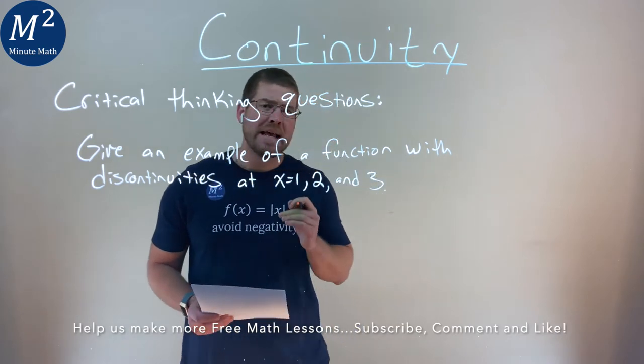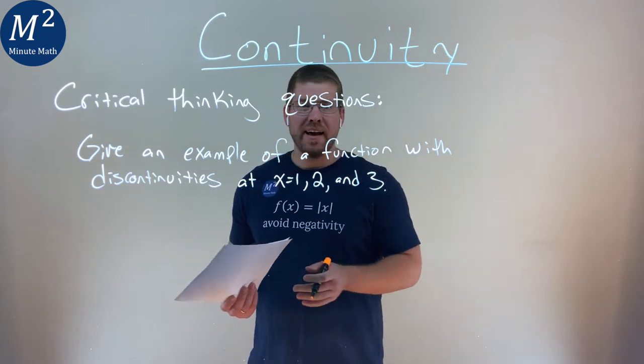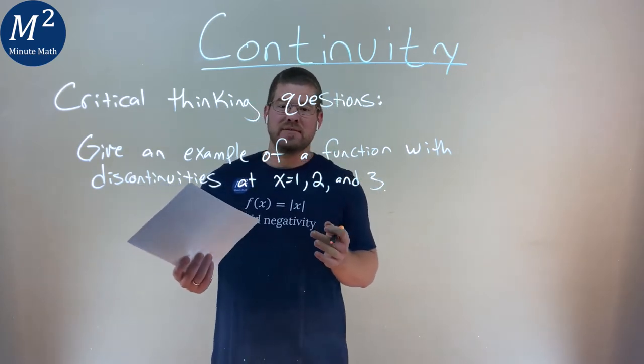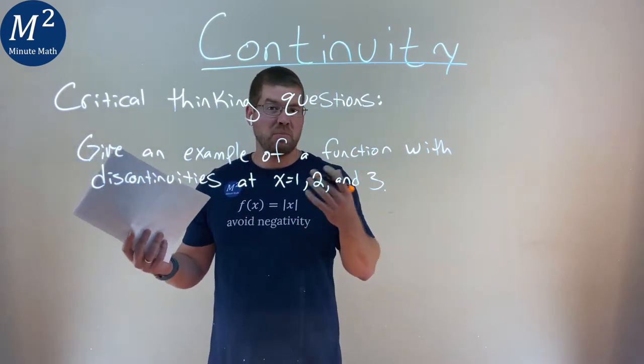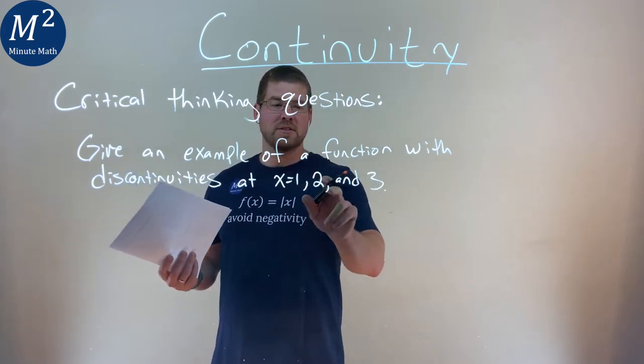Now there are many answers that work, but I'm trying to find discontinuity, and the best way to do that is to divide by 0. When our function divides by 0, we can make that happen when x is 1, 2, and 3.